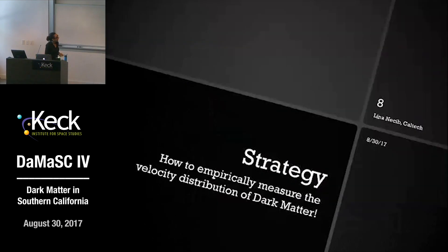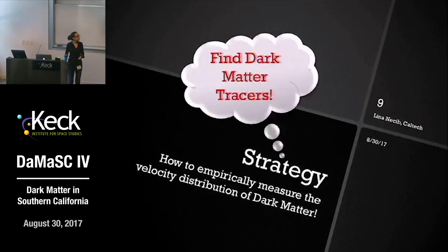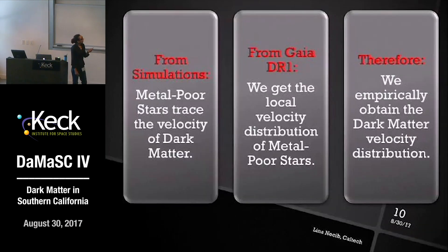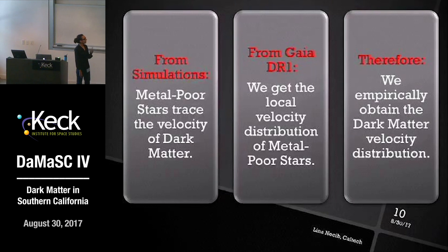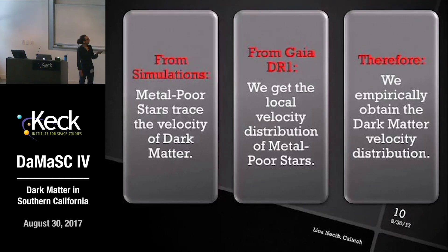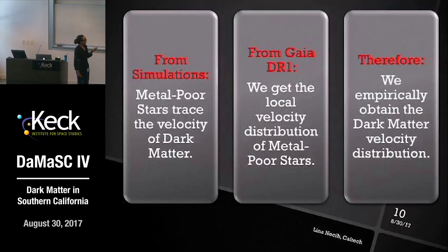How do we empirically measure the velocity distribution of dark matter if we cannot see dark matter at all? The bottom line is to find dark matter tracers — something that behaves like dark matter but can be observed. This is the three-step process: from simulations we found that metal-poor stars trace the velocity distribution of dark matter, meaning they have similar kinematics. Knowing this, we went to the first data release of Gaia and constructed the velocity distribution of these metal-poor stars. Combining both steps, we have the velocity distribution of dark matter.